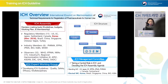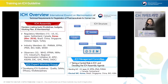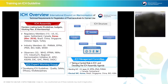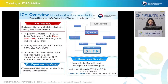As you can see on this slide, there are 11 regulatory members, six industry members, and also 32 observers. When it comes to ICH's structure, it has an assembly and expert working groups which make the guidelines. The overall operation is conducted by the ICH management committee.